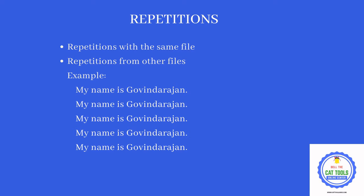A repetition occurs if a sentence repeats many times within the same file, or if you are handling a set of files. For example, if 'My name is Govindarajan' repeats five times in the same file, that is a repetition. Also, if you are handling a project with four or five files and the segment 'My name is Govindarajan' appears in the first, second, and third file, that is also considered a repetition.